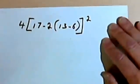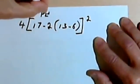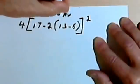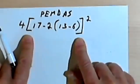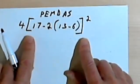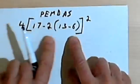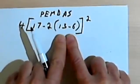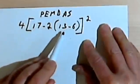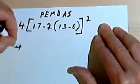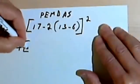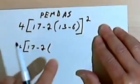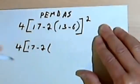Here's another one. I'll put 'Please Excuse My Dear Aunt Sally' at the top of the page. I've got square brackets and rounded parentheses. When you have parentheses within parentheses, you go to the ones that are innermost. So this tells me I've got to start with the 13 minus 6. I'll write everything else as it is — 4 times [17 minus 2 times (13 minus 6)]. And 13 minus 6 is 7.